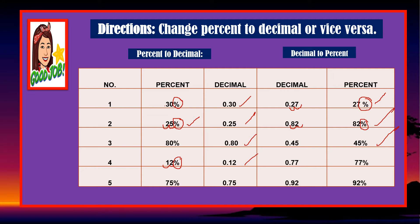Now this one — change to percent. We have 0.77. Move the decimal place one, two, and add percent. And we have 75 percent to decimal — remove the percent sign and count one and two. So that is 0.75. For decimal to percent, you just move the decimal to the right — one and two — and then put a percentage sign. Okay, good job, very good.